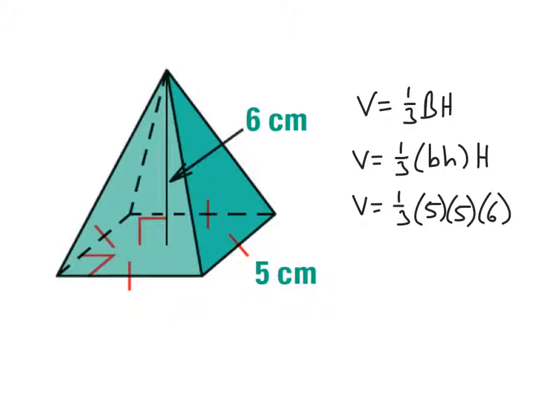So I can go ahead and take one-third of six, which gives me two. So five times five is 25. Twenty-five times two gives me a volume of 50.